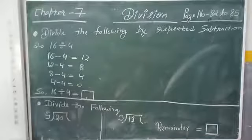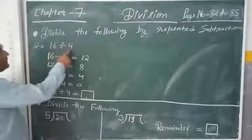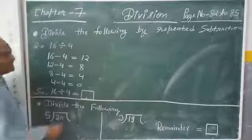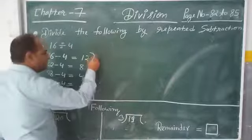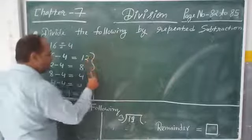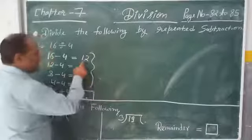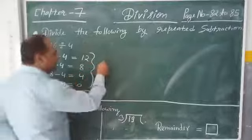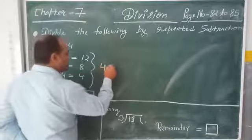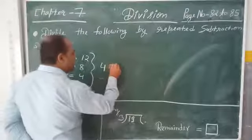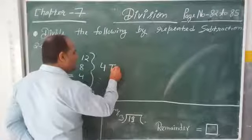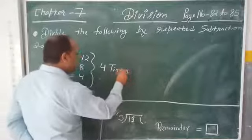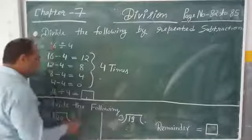So children, we have to subtract 4 from 16 a total of 4 times: 1, 2, 3, 4 — four times. So we will write here 4 times. The answer is 4.